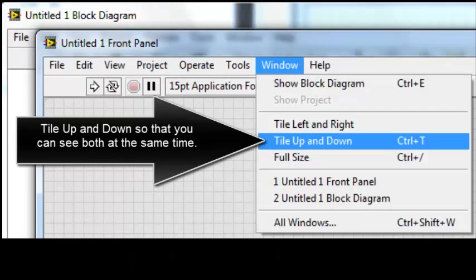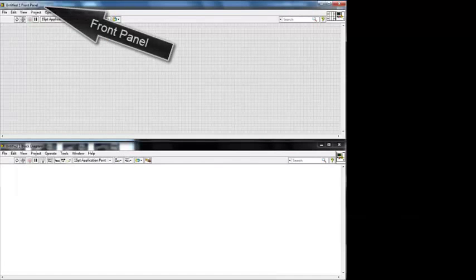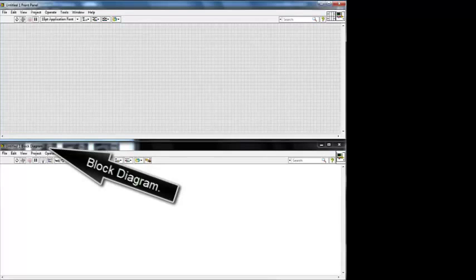Tile up and down so that you can see both at the same time. That's the front panel, and that's the block diagram.